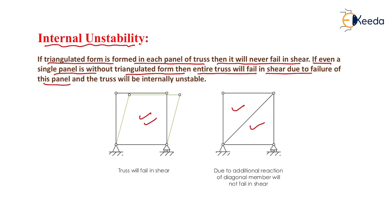If there is any panel which is not in triangulated form, it will fail in shear, resulting in the complete failure of the truss. That is why when there is no triangulated form in any panel, the truss is said to be internally unstable. If each and every panel of the truss is in triangulated form, then the truss is internally stable. That is all about the stability of trusses.